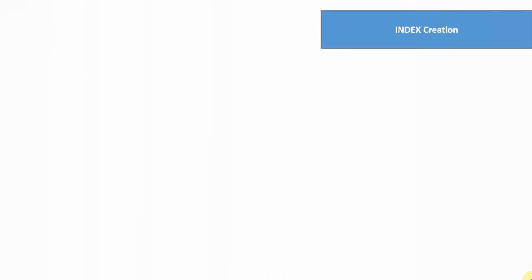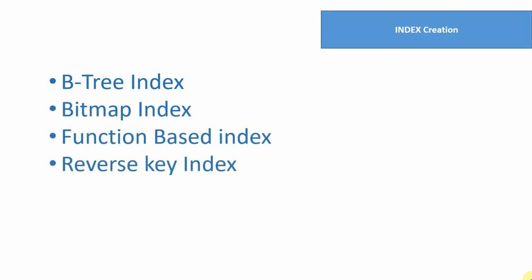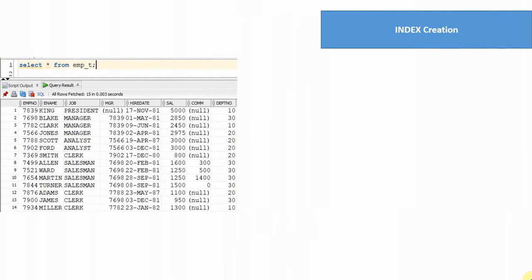We are going to create five different types of index: a B-tree index, a bitmap index, a function-based index, a reverse key index, and a composite index. Though a composite index is not a separate type per se, we'll understand what is a simple index versus a composite index and create one. Once we've created all five indexes, we'll see where to find all the metadata information about them. We'll be using an employee table called emp_t to create these indexes.